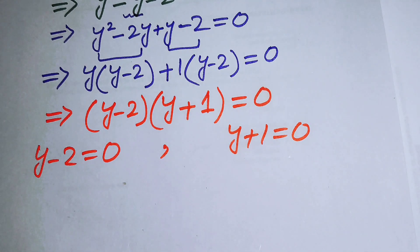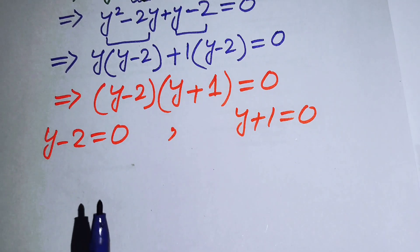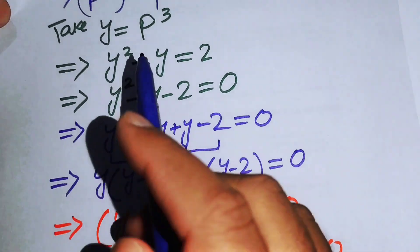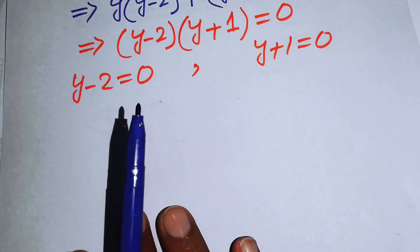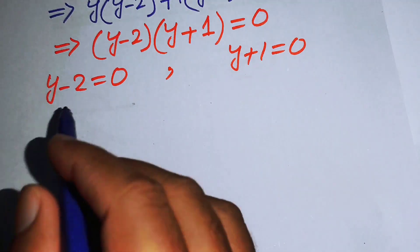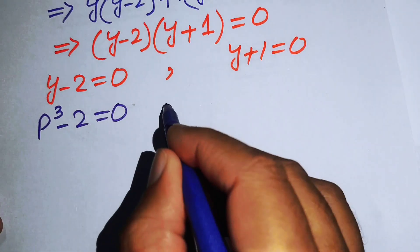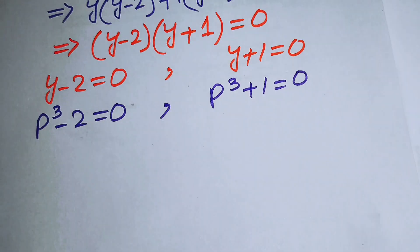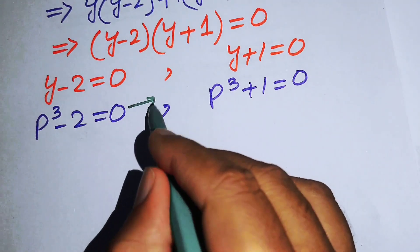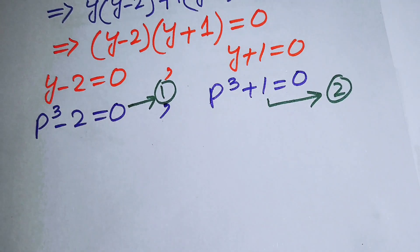We back-substitute y = p cubed into both cases. The first case gives p cubed − 2 = 0 (Equation 1), and the second case gives p cubed + 1 = 0 (Equation 2).